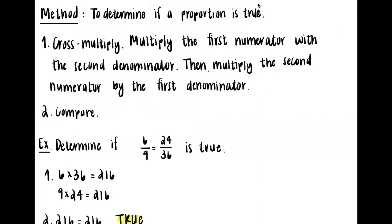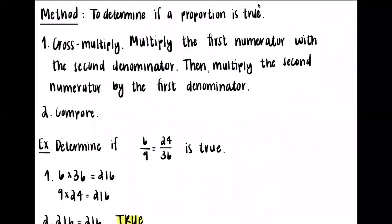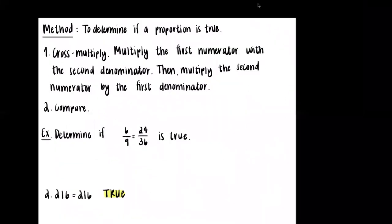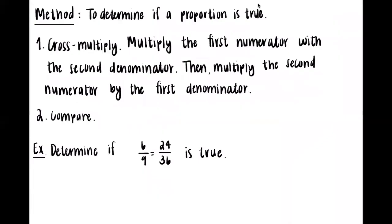Now we're going to talk about the same concept but in terms of fractions — without the extremes and means approach. I don't mind which way you do it on a final unless it's specified in the instructions, but you want to be familiar with both. To determine if a proportion is true using fractions, we can cross multiply — going diagonally between the two fractions. If the two products are equal, the proportion is true; if not, it's false.